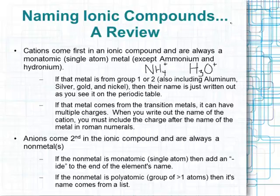Hydronium is a special ion you'll encounter when we talk about acids; its formula is H3O with a positive one charge. Both ammonium and hydronium are cations with no metals — nitrogen, hydrogen, and oxygen are all non-metals — but they work together as a group to have a positive charge. Most other cations are monatomic metals, like copper with a plus two charge (Cu2+). If the metal is from group one or two, including aluminum, silver, gold, and nickel, you just write out its name. Transition metals can have multiple charges.